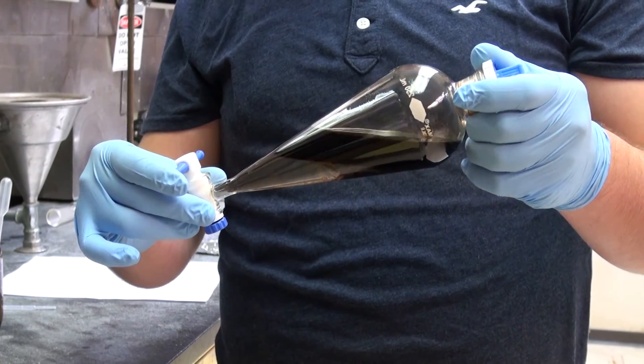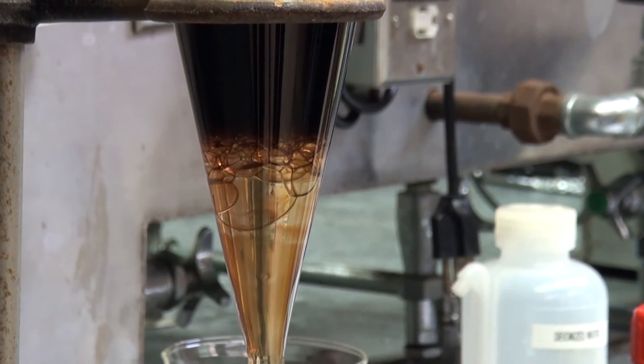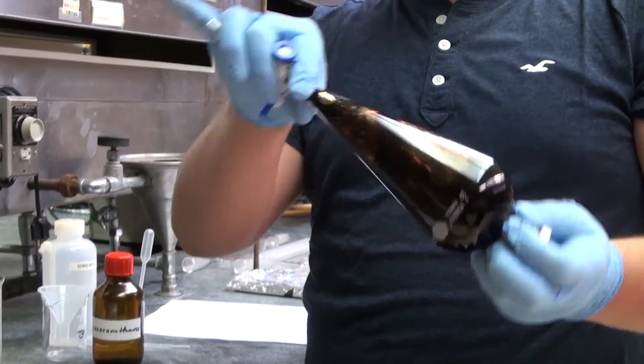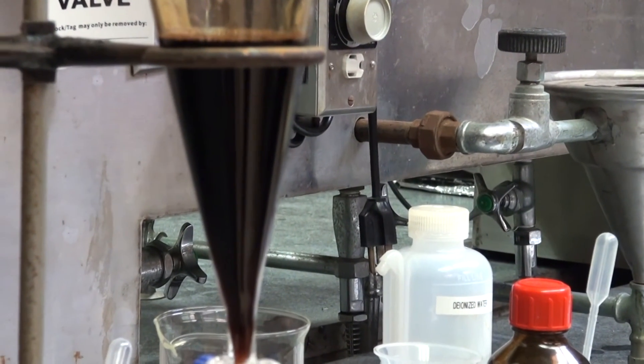If you shake the separatory funnel too much, you will see an emulsion layer in between the organic and the aqueous layer. If you shake it even more vigorously, you will have an emulsion layer with probably no chance of separation.